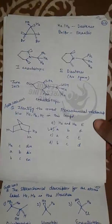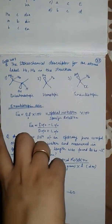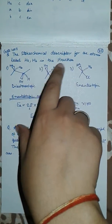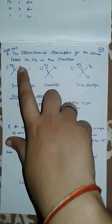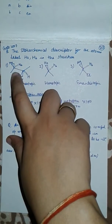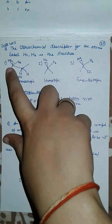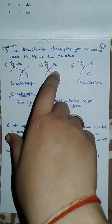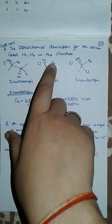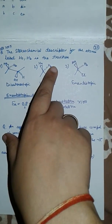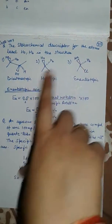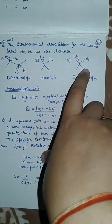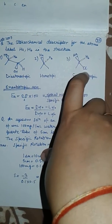Now the stereochemical descriptors for the atom label H_A and H_B - we have to find out in the following structure. H_A and H_B in these are diastereotopic because there is no symmetry. In this it is homotopic because either of H_A and H_B they are same. And enantiotopic in this one, because when the axis is passed they are reflected.